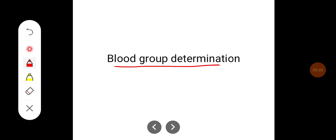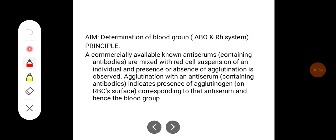The major blood groups will have a strong antigen-antibody reaction and hence they are going to lead to fatal consequences, whereas minor blood groups will not have such an effect. In this particular class we will try to determine the blood groups of the ABO system and the Rh system.